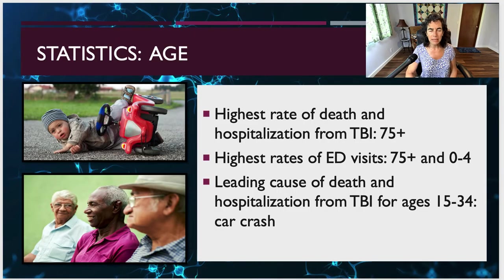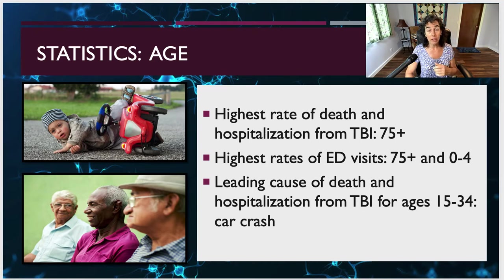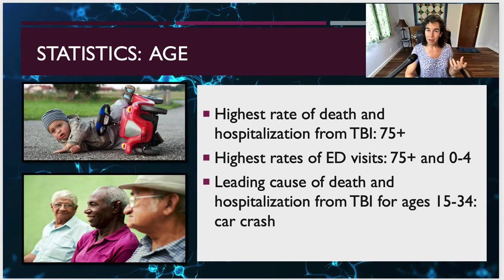Falls are followed by an even divide between being struck by or against a hard object and traffic accidents. Assault accounts for a little under 10%, and an additional 15% are either other or unknown. Falling is a huge deal. In terms of statistics by age, the highest rates of death and hospitalization are for those over 75 years of age, which makes sense given the link between falls and TBI. The highest rates of emergency department visits are either age 75 plus or very young children aged 0 to 4.